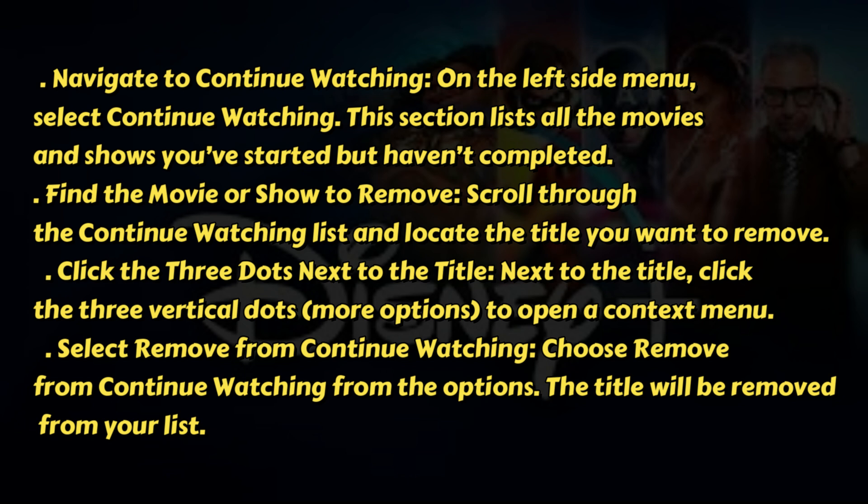Find the movie or show you want to remove. Scroll through the Continue Watching list and locate the title, then click the three vertical dots next to the title to open a context menu.